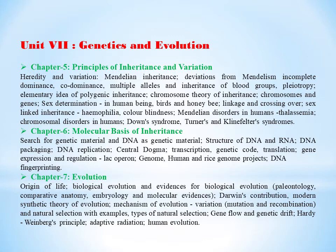Chapter 6, molecular basis of inheritance. Here we're learning about the genetic material, structures of DNA and RNA, then DNA packaging, DNA replication. We're learning about the central dogma, transcription, genetic code, translation, gene expression and regulation.